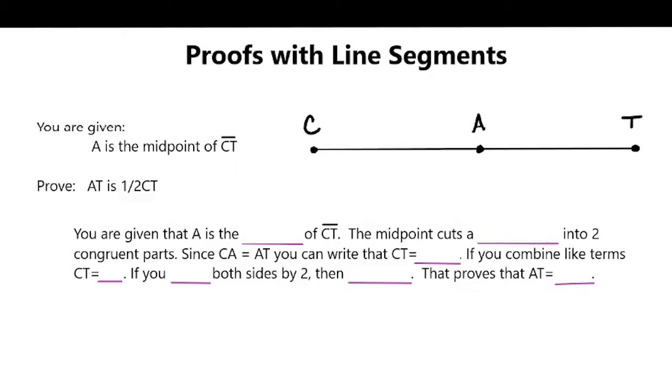Well, just looking at my diagram here, I know that if CT has a midpoint of A, that means that CA and AT are congruent, so that'll mean that they're the same length. I'm going to write out a proof here and it's a paragraph describing and explaining why this is true.